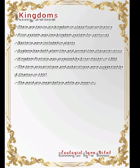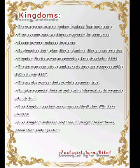There are two to six kingdoms in classification history. The first system was the two-kingdom system, which remained for centuries. Bacteria were included in plants. Euglena has both plant-like and animal-like characteristics, and this organism forced scientists to devise a new kingdom. Kingdom Protista was proposed by Ernest Haeckel in 1866 — this is a very important MCQ. The terms prokaryotic and eukaryotic were suggested by E. Chatton in 1937.